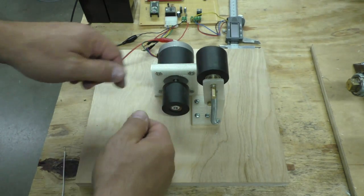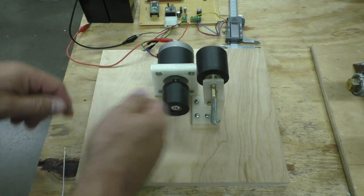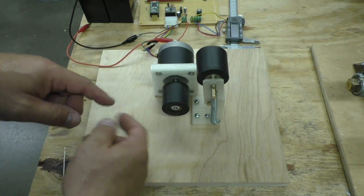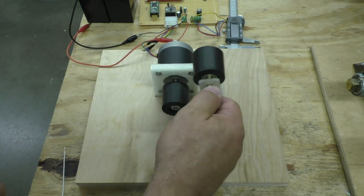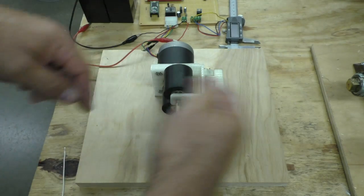So when you're first working with your filament, you can get everything kind of going at a good pace, get all the kinks and everything out, then lock that down, and then it'll start pulling.